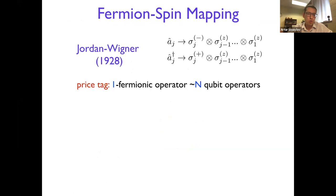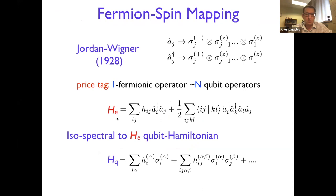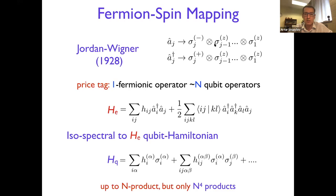These mappings essentially bring us from the second quantized electronic Hamiltonian to a qubit Hamiltonian, which we can then treat using a quantum computer. The price we pay for this non-linear Jordan-Wigner mapping is that for one fermionic operator we can introduce up to n qubit operators, where n is the number of qubits. But in the qubit Hamiltonian we still have up to a polynomial number of operators — roughly n to the fourth — so it's manageable.